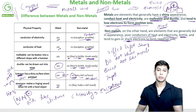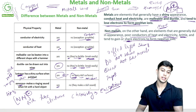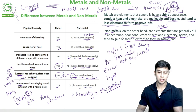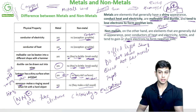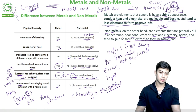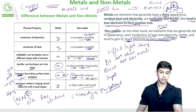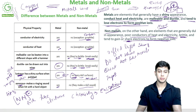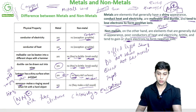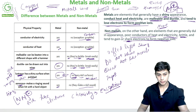Non-metals do not make that ringing sound — they make a dull sound. When you ring a bell, the bell is made of metal, which is why it rings. If it were made of non-metals, it would not ring because it does not have the property of being sonorous.